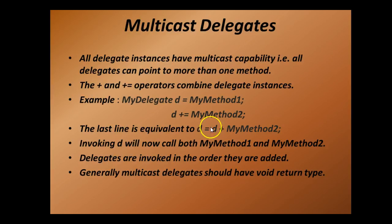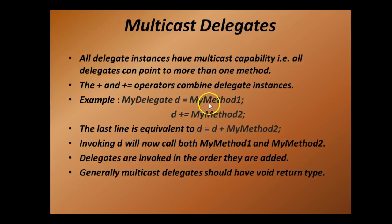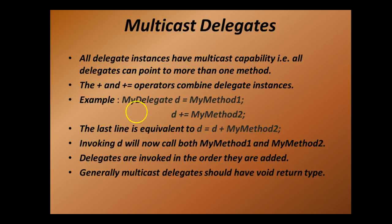The last line is equivalent to D equals D plus my method two. So what's stored in D is basically my method one and my method two. Now if I invoke D, it will call both my method one and my method two.